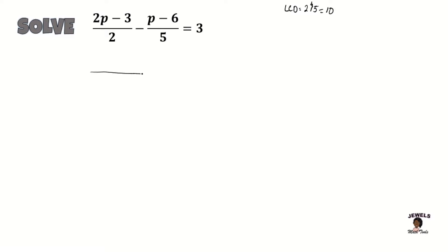So that means that we're now going to be converting this entire equation to its equivalent form where all of our denominators have a denominator of 10. So let's start with our first one, which is 2p minus 3 all over 2. So let's find the equivalent form for our first fraction.